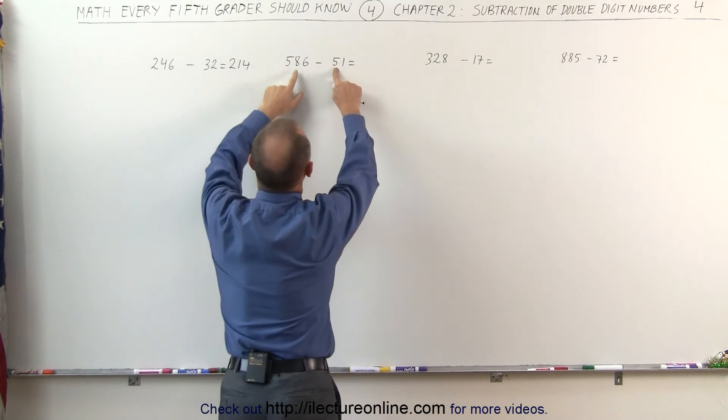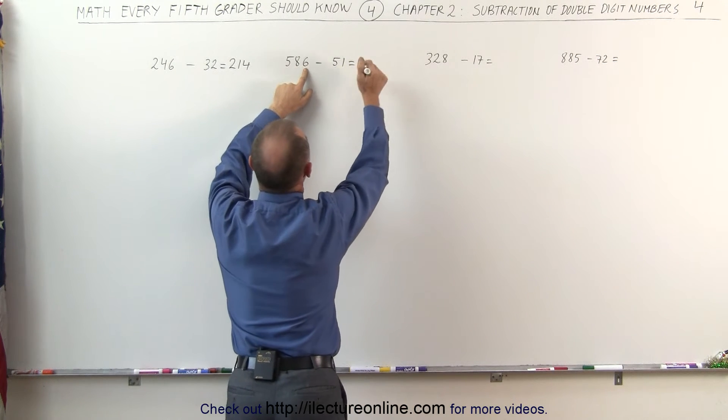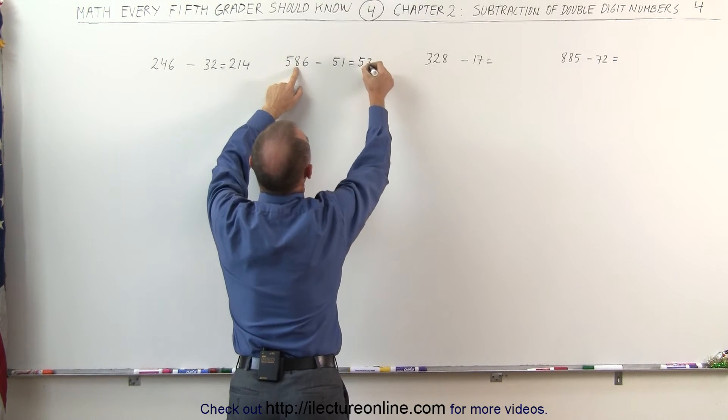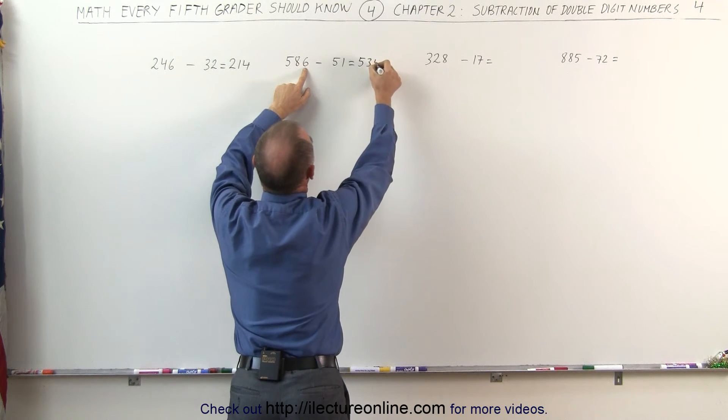Same over here. 5 is smaller than 8, 1 is smaller than 6, this becomes 5. 8 minus 5 is 3, 6 minus 1 is 5.